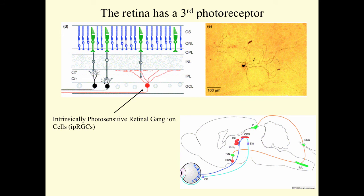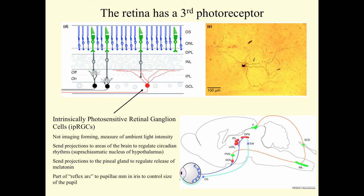Finally, the retina has a third photoreceptor: the intrinsically photosensitive retinal ganglion cell. Its cell body is in the ganglion cell layer and it sends out dendritic/receptive processes into the inner plexiform layer. These cells don't form an image; rather, they measure the intensity of ambient light. They send projections to the suprachiasmatic nucleus in the hypothalamus to regulate circadian rhythm, projections through the paraventricular nuclei to the pineal gland to regulate melatonin synthesis and secretion, and they form part of a reflex arc controlling pupillary muscles in the iris to regulate pupil size.